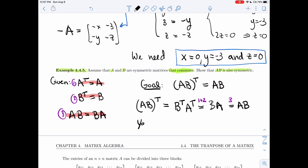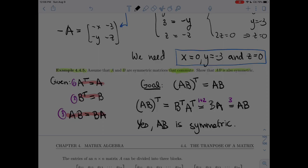All right. So we did prove that the transpose of AB is AB. And so, yes, AB is symmetric.